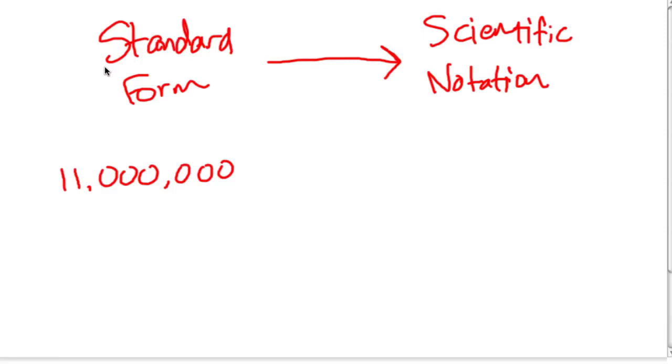Our goal here is to write a number in standard form and then turn it into something that might help us, scientific notation. Standard form is something you typically see. You write numbers where each digit tells you a different place value. It's basically the standard way of writing a number.